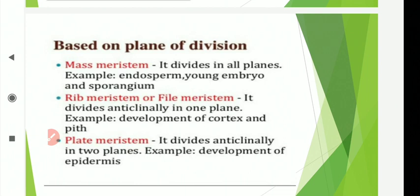The last type based on plane of division is plate meristem. In this case, meristem cells divide by anticlinal and periclinal divisions on two sides, and thus plate-like cells are formed. The cells are in a single layer or a plate of one layer of cells. For example, single-layered epidermis or meristem forming the leaf blade — these are examples of plate meristem.